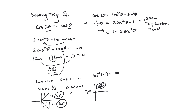Set each factor equal to zero. You get cosθ = 1/2 and cosθ = −1. For cosθ = −1, use the unit circle: x = −1 only at 180 degrees, so that answer is 180. For cosθ = 1/2, cosine is positive in quadrants I and IV. Using the unit circle and a 30-60-90 triangle with adjacent = 1 and hypotenuse = 2, the reference angle is 60 degrees, giving solutions at 60 and 300 degrees.